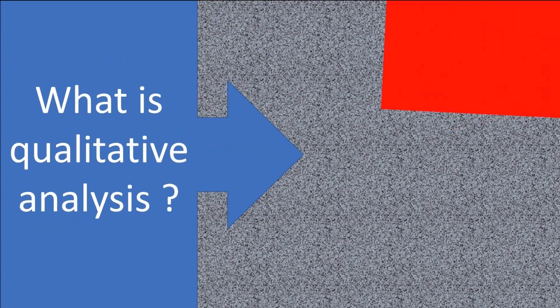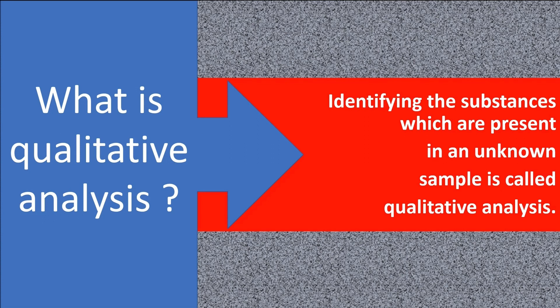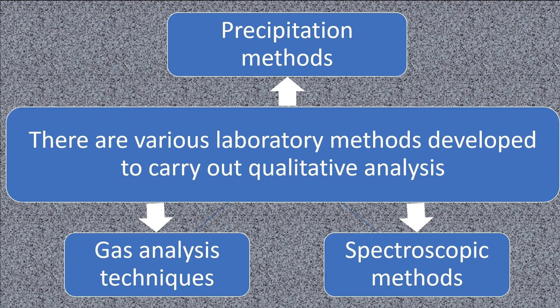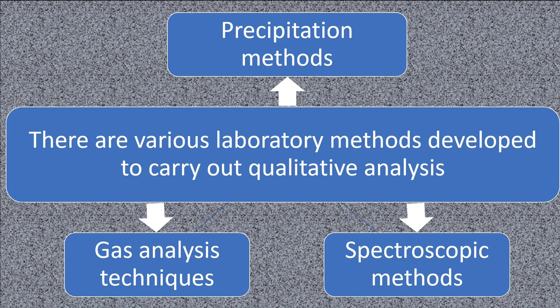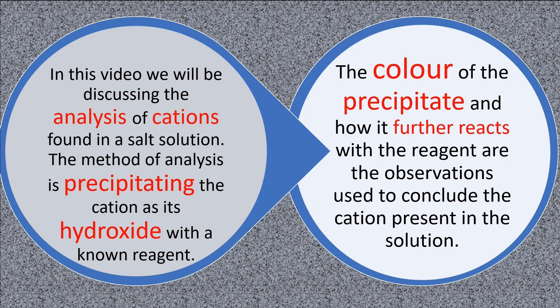Identifying the substances which are present in an unknown sample is called qualitative analysis. There are various laboratory methods developed to carry out qualitative analysis: precipitation methods, gas analysis techniques, and spectroscopic methods. For your O-level examinations, you will be learning about precipitation methods and gas analysis techniques only.